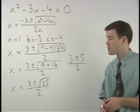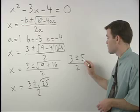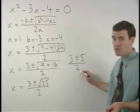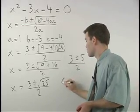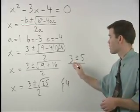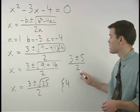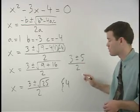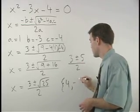So our solution is either 3 plus 5, over 2, which is 8, over 2, or 4. Or 3 minus 5, over 2, which is negative 2, over 2, or negative 1.